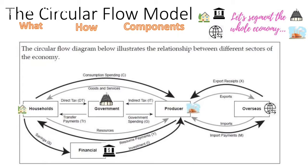Looking at the other arrow going from households to producers, households provide resources to producers in terms of time, skills, and labour. In return, the producers pay resource payments, which we know as wages. So if you are working at the supermarket, you would be using your resources — your time, skills, and energy — and in return you receive resource payments. That's the circular flow just between those two sectors.